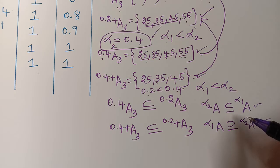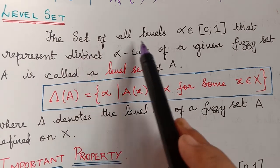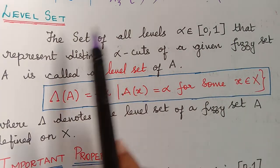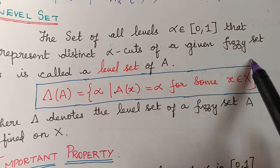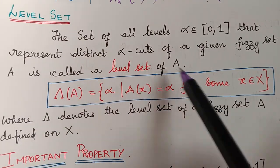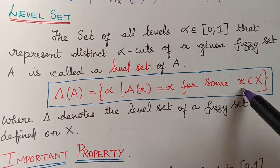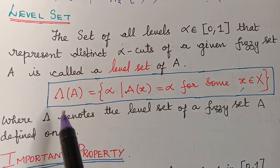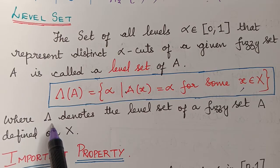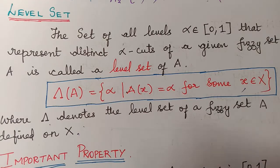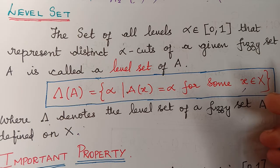Finally, the level set of a fuzzy set A is the set of all distinct alpha levels that represent distinct alpha cuts of A, denoted by a special symbol. In our next video we will learn about the support, height, and normalized fuzzy set. Thank you.